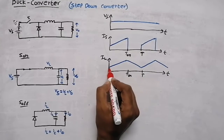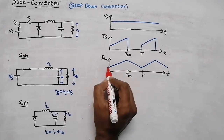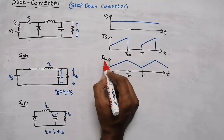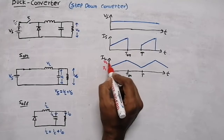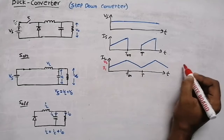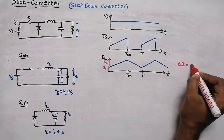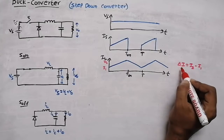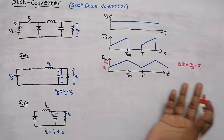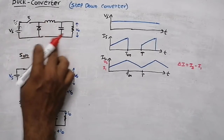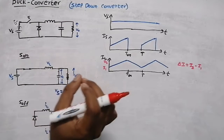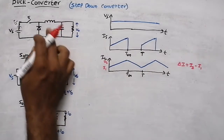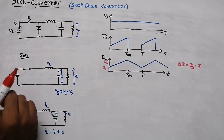In the inductor current waveform, we can identify a minimum point I1 and a maximum point I2. The change ΔI = I2 − I1 is known as the ripple current. The inductor and capacitor together form a filter circuit: the inductor removes ripples in current and the capacitor removes ripples in voltage.